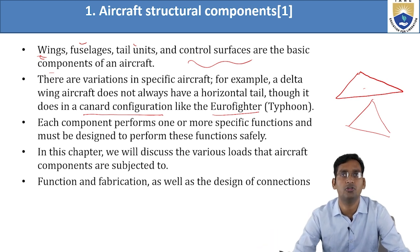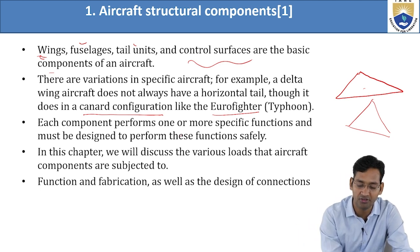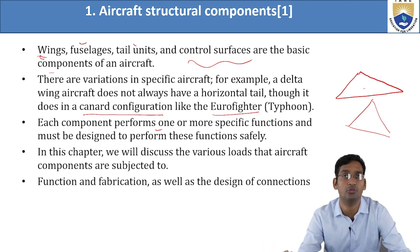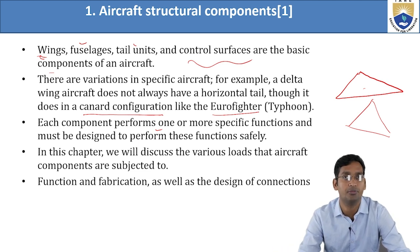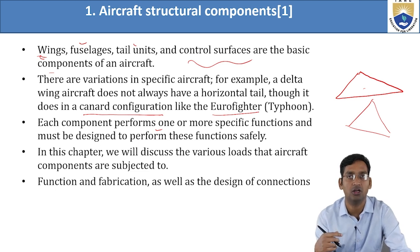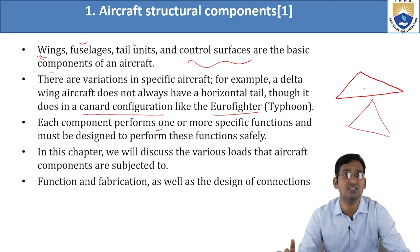Each component performs one or more specific functions and must be designed to perform these functions safely. For example, the control surface is for controlling only — you cannot put passengers or cargo there. The fuselage is where passengers sit and cargo is kept. They each have their specific work and are designed to perform it safely.